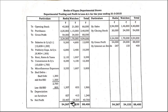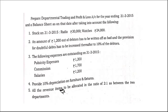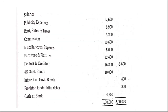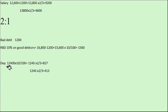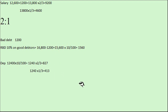For depreciation on furniture and fixtures: furniture value is 12,400. Depreciation = 12,400 × 10% = 1,240. This 1,240 must be divided in the 2:1 ratio — 2/3 for one department and 1/3 for the other.